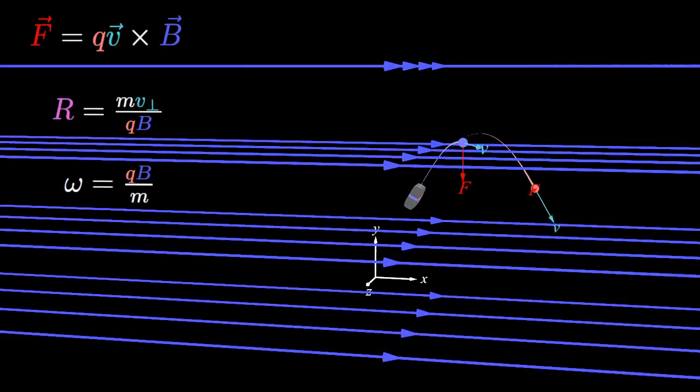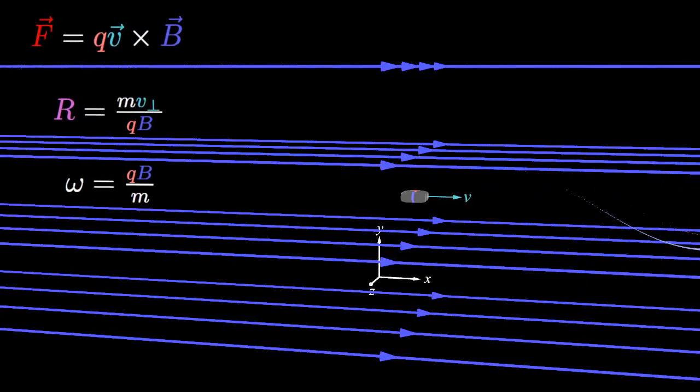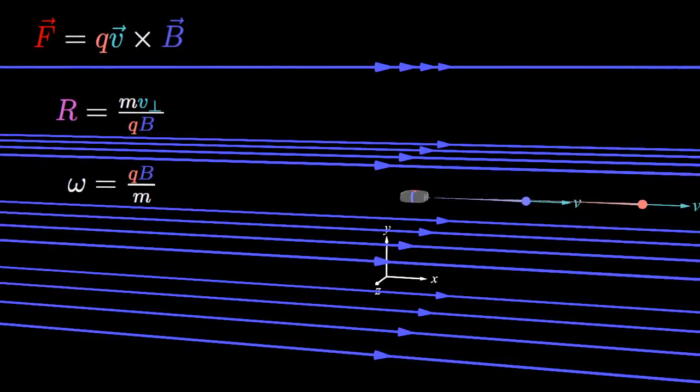The component of velocity parallel to the magnetic field determines the part of the motion along the magnetic field lines. This part of the motion is at a constant velocity.